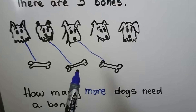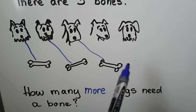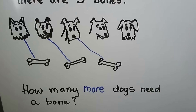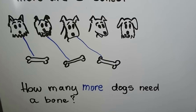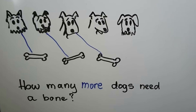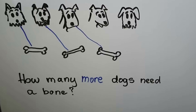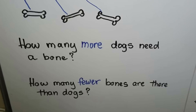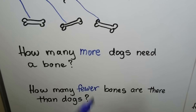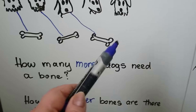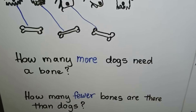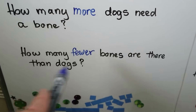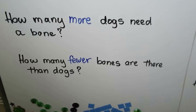We could also say we have two bones too few — like we're missing two bones. How many fewer bones are there than dogs? Two. We need two more. Fewer bones.